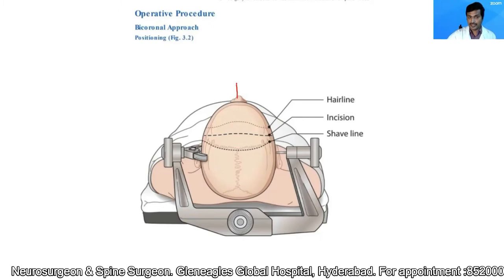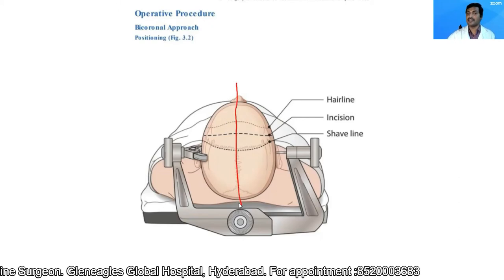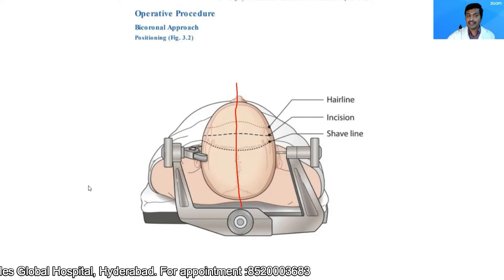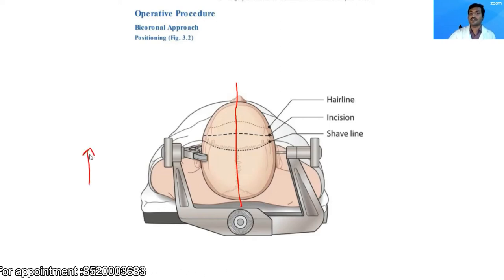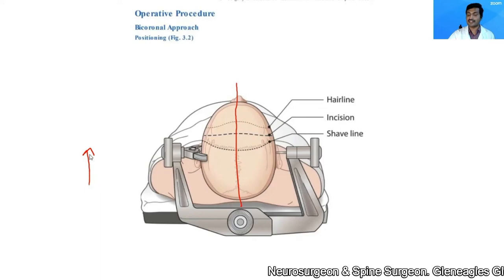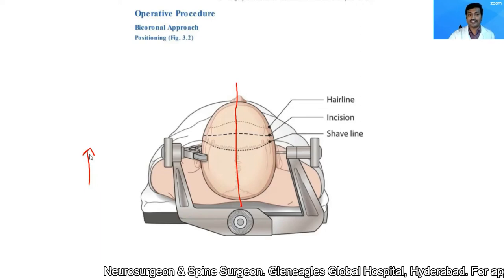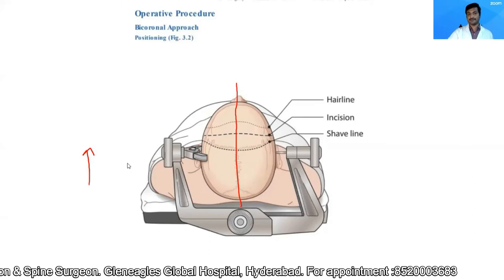I keep the head neutral in the midline and slightly elevate the head end so that it is above the heart level. This ensures adequate venous return, decreases brain swelling, and also decreases the amount of venous ooze in the brain.